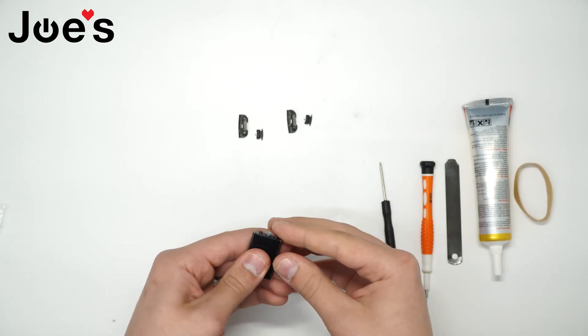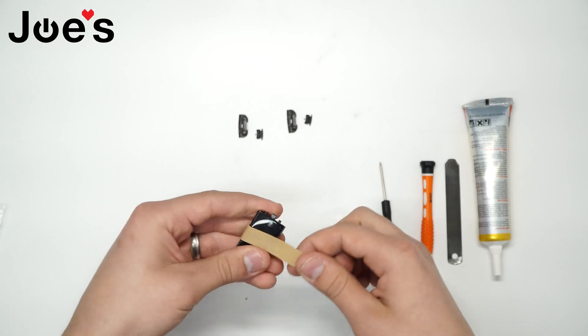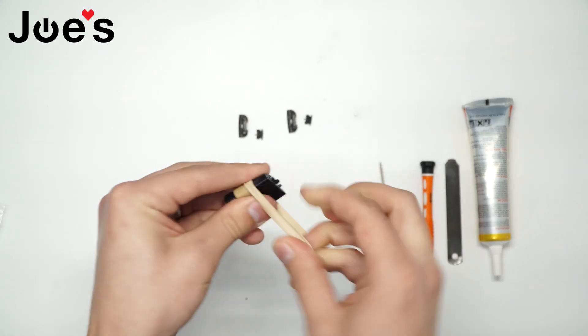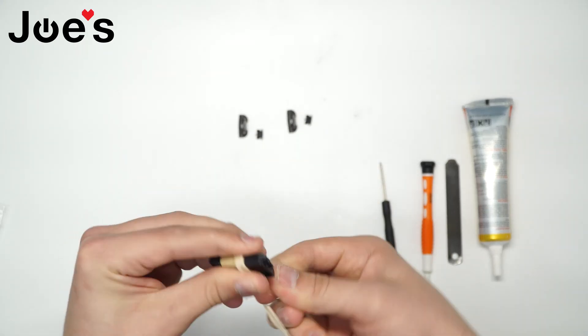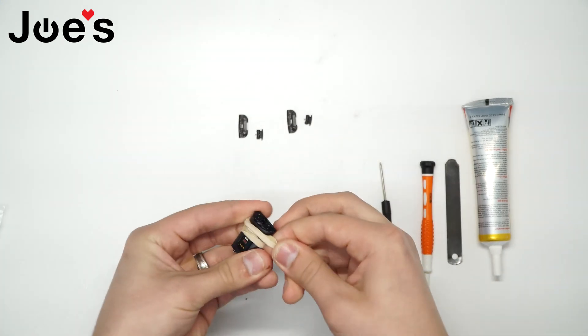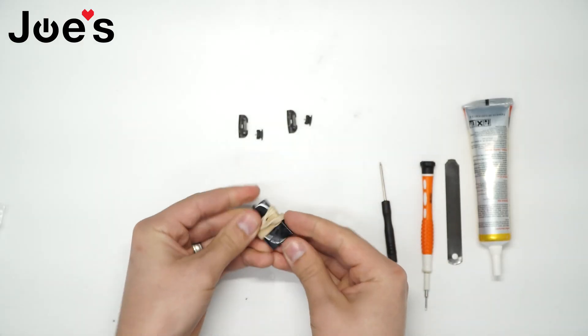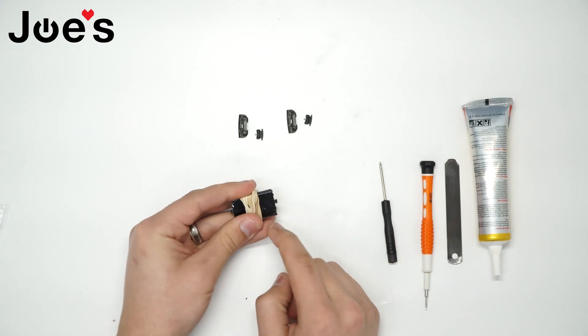Put the screen down, take your rubber band, and go three or four loops around to make sure it's holding the screen. That should be holding the screen.